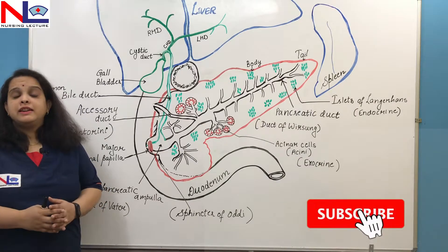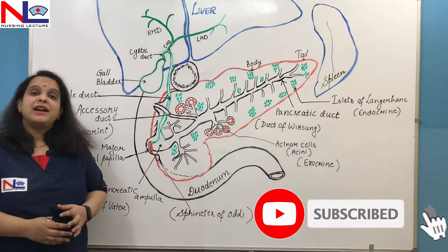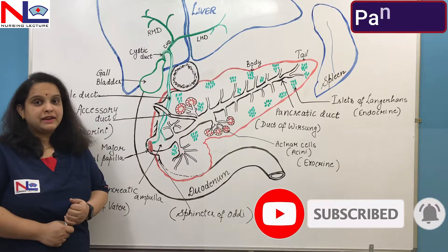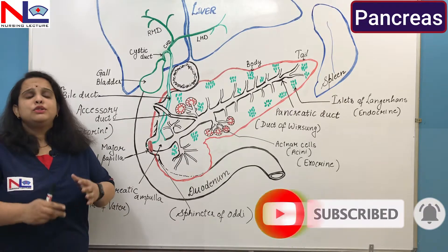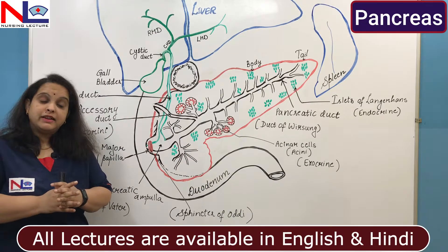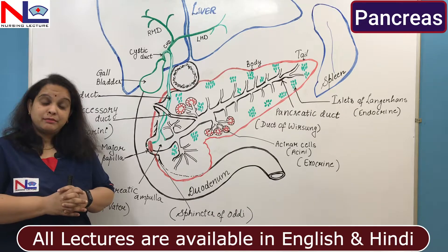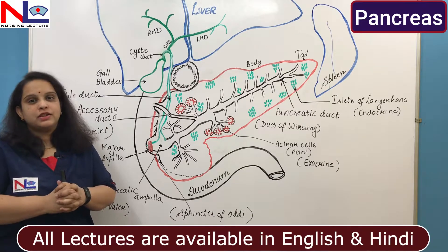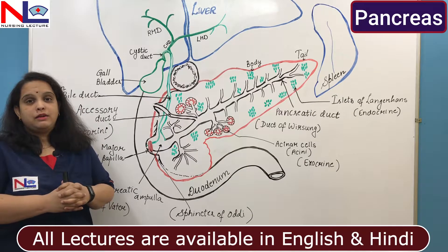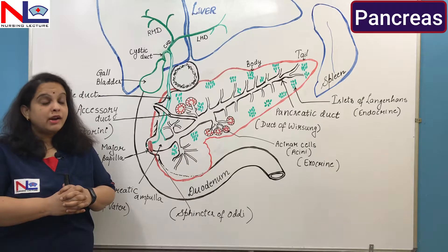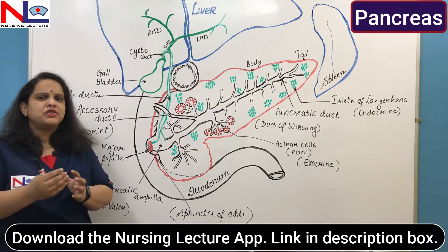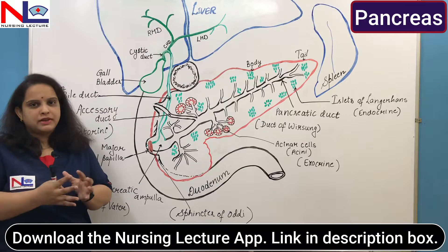Hello everyone, here in this lecture I'm going to deal about the structure of pancreas. It is the accessory organ in the digestive system that releases some secretions — enzymes on the surface of the small intestine — that further aid in digestion of food substances.